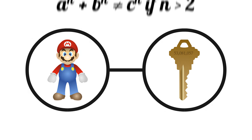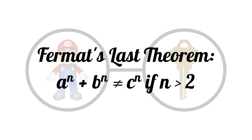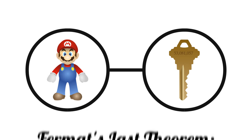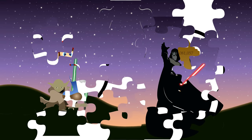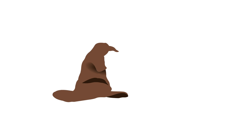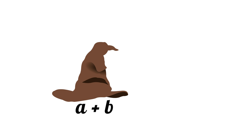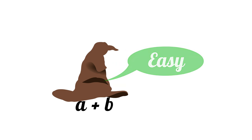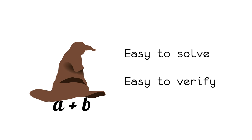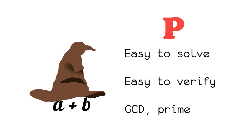P vs. NP typifies the easy-to-understand-but-hard-to-solve math problem. The problem boils down to: is there an easy way to solve jigsaw puzzles? In computer science, we like to categorize problems based on how hard they are to solve. Some problems we know are easy, such as adding two numbers together — it's simple to do and simple to check if someone's answer is correct. We'll call this group P. Examples of problems in P include finding a number's greatest common divisor and determining if a number is prime.